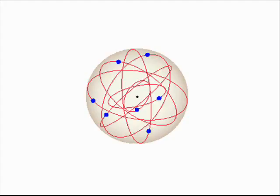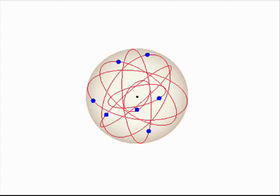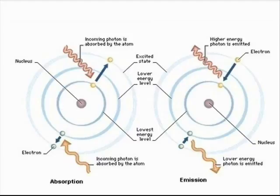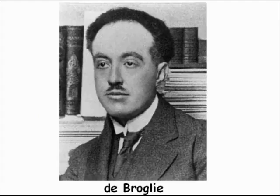This high-speed motion counteracts the attraction from the nucleus and prevents the electrons from falling into it. When an atom absorbs energy, an electron jumps from a low energy level to a higher energy level — from an inner orbit to an outer orbit. This excited state cannot be sustained, so the electron returns to its ground state. This jump causes the energy difference between the two levels to be released as a photon.